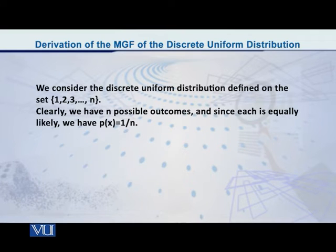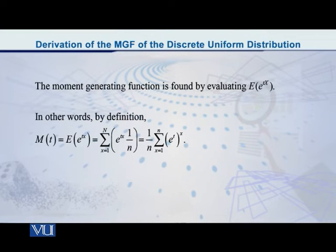Now in this case, it becomes simple and it is obvious that because all the various n possible outcomes are equally likely to occur, which is the fundamental condition of the discrete uniform distribution, then obviously each one of the n probabilities is equal to 1 by n.